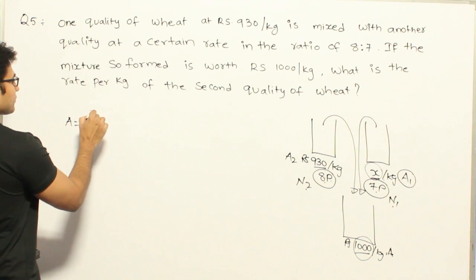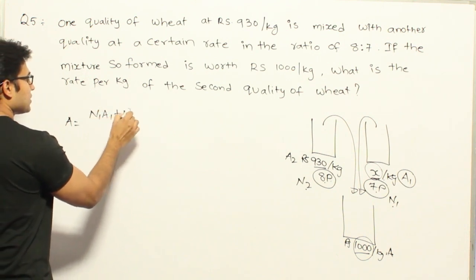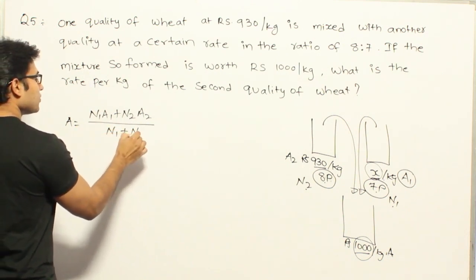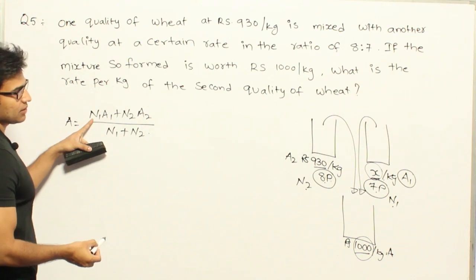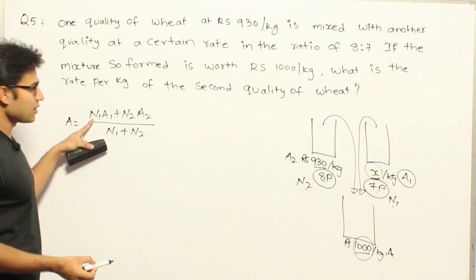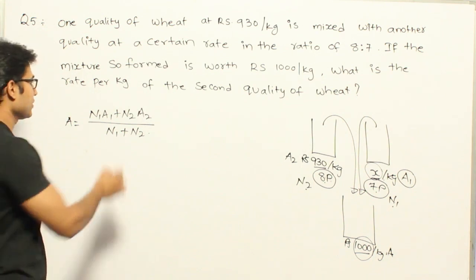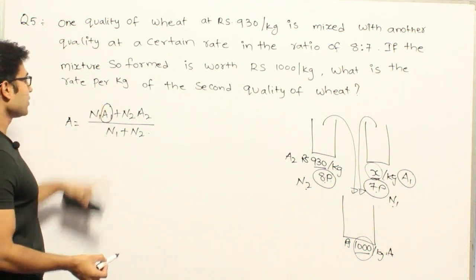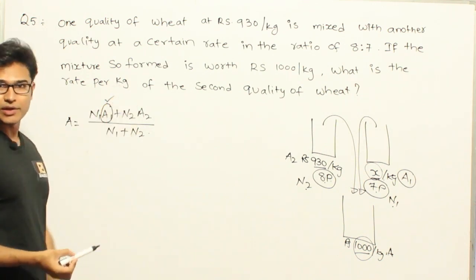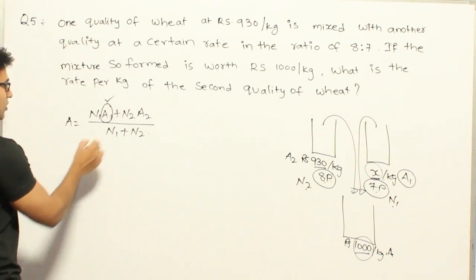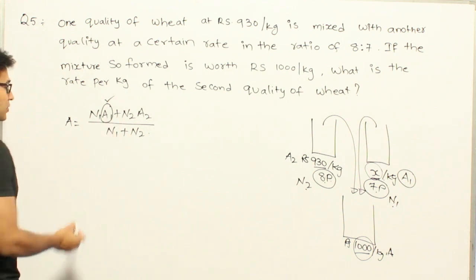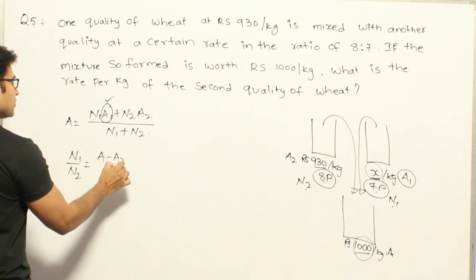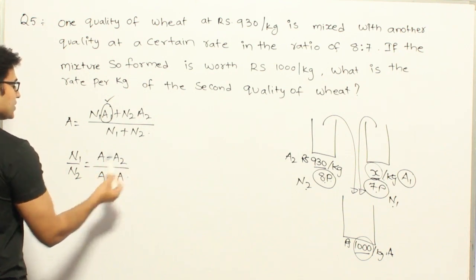So see, what is that I am saying? Capital A equal to N1 A1 plus N2 A2 divided by N1 plus N2, right? Assume that N1 is 7P and N2 is 8P, and you are supposed to calculate the value of A1, right? In this, if you assume that A2 is already given, A is given, right? So the only thing that you have to find out is A1. This is the way you can find it out. Or otherwise, if you remember the other formula that we have derived from this, N1 by N2, the ratio. So N1 by N2 is equal to A minus A2 divided by A1 minus A, right?